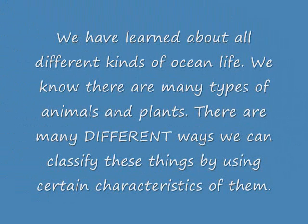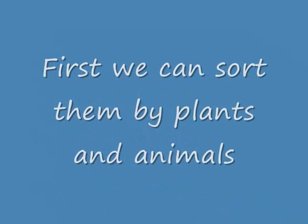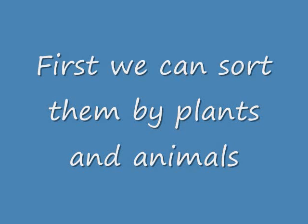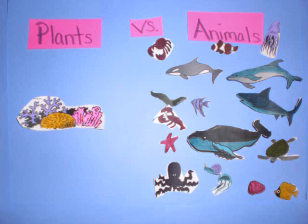We have learned about all different kinds of ocean life. We know there are many types of animals and plants. There are many different ways we can classify these things by using characteristics of them. One major way to classify ocean life is by sorting by plants and animals.